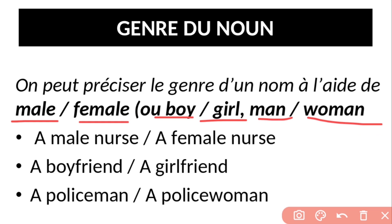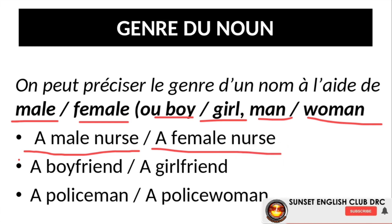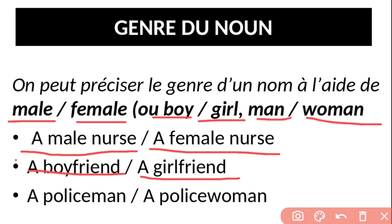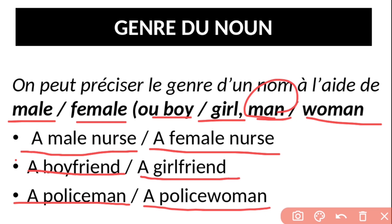Par exemple, pour dire « un infirmier » en anglais, on utilise le mot avec man, et pour dire « une infirmière », on utilise la forme féminine correspondante. De même, pour exprimer « un policier », on dit policeman, et pour « une policière », on dit policewoman — c'est-à-dire qu'on recourt à man pour le masculin et à woman pour le féminin.